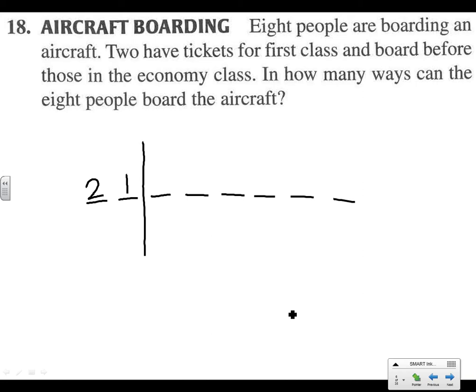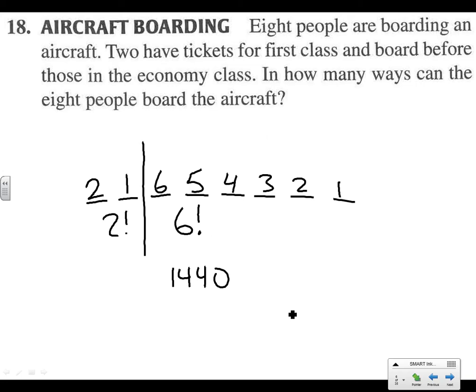After the first person boards, there's only one person left with a first class ticket. After the first class people get on, then the regular passengers get on, and there are 6 of those, then 5, 4, 3, 2, 1. So we multiply all those together and we get 1440. To be clear, this is 2 factorial times 6 factorial — 2 ways for first class and 6! ways for economy class.